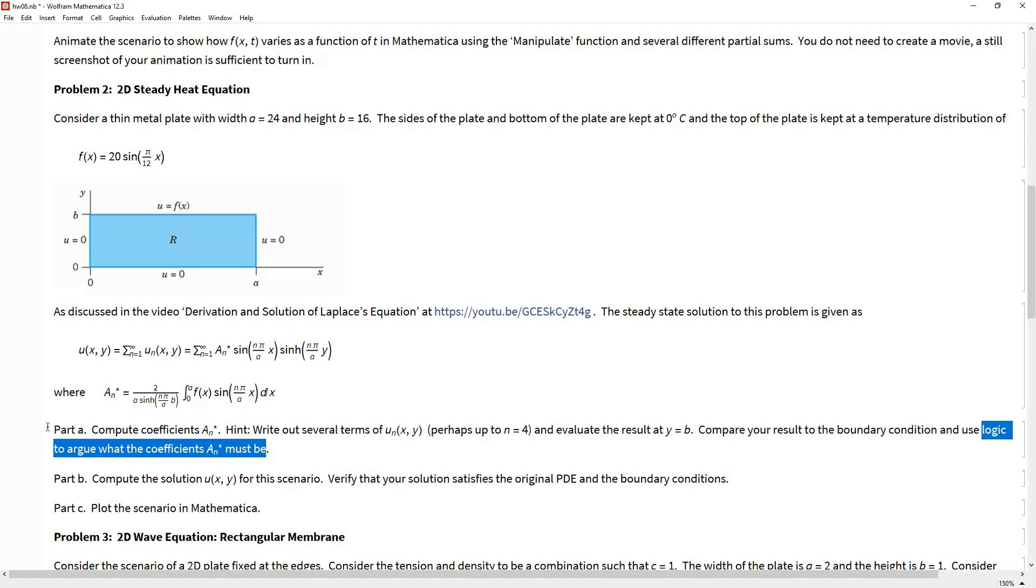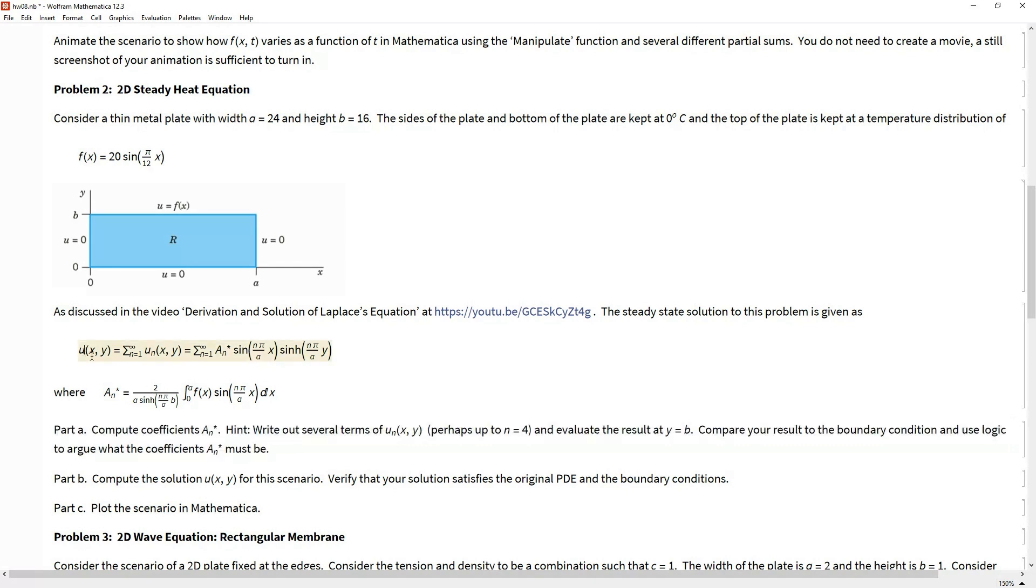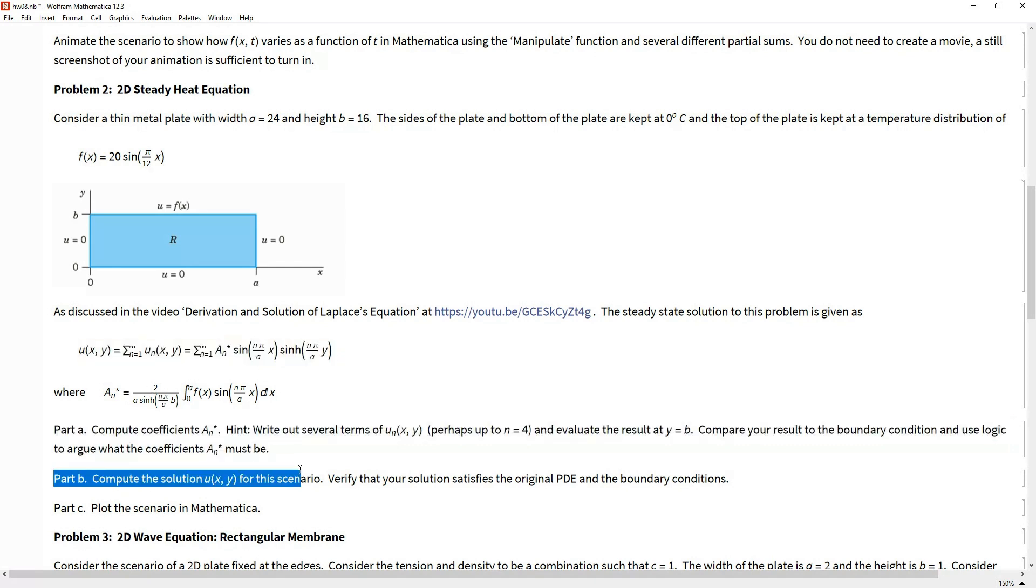All right, so that's the hard part. Once you've got part a done, it's pretty much just, you've got this whole expression, well just go ahead and compute what this looks like and verify that it does satisfy the boundary conditions and the original PDE, namely the Laplace equation. Then we can go ahead and plot the scenario in Mathematica. Notice we said plot not animate, because animate implies that we're looking at how it varies as a function of time. There is no time component in this because we're looking at the steady-state solution. Really this is just a two-dimensional function - the domain or the independent variable, there's two independent variables. If you plot this thing, literally I'm just saying do plot3d in Mathematica on this thing, you're going to come up with effectively a 3D plot which is going to show the temperature distribution at steady-state over this plate.